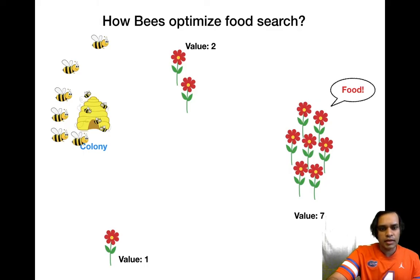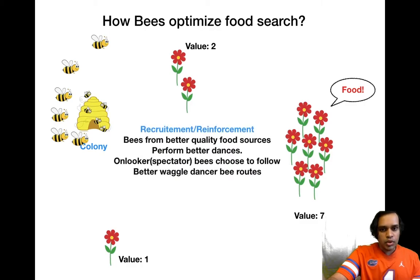What these guys convey by the waggle dance is how much food is available where they exploited it. The remaining bees will look at the waggle dances and judge based on the information which source of food is better. Naturally these bees are smart - they will choose to follow the bee from the food source which has more value, in our case source two. In this way we get a sense of reinforcement or feedback. This feedback makes sure that parts with richer food sources get reinforced more and more.